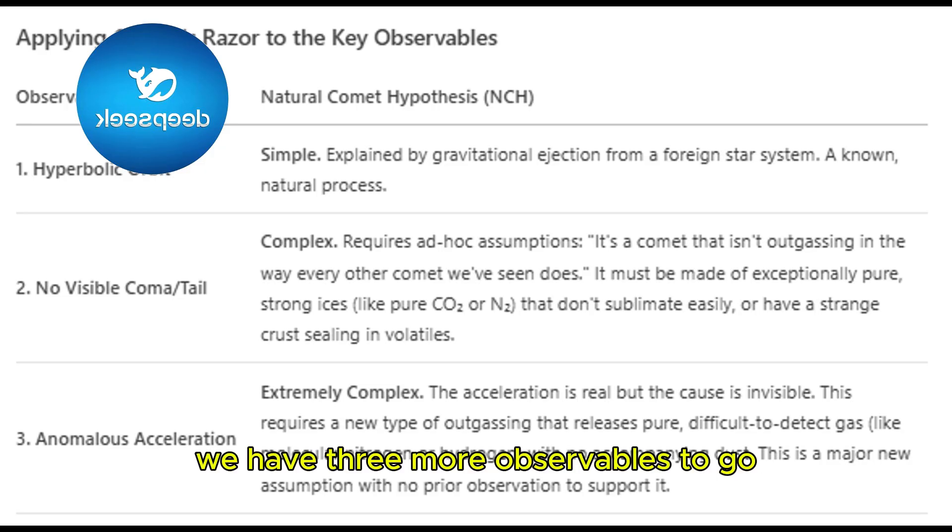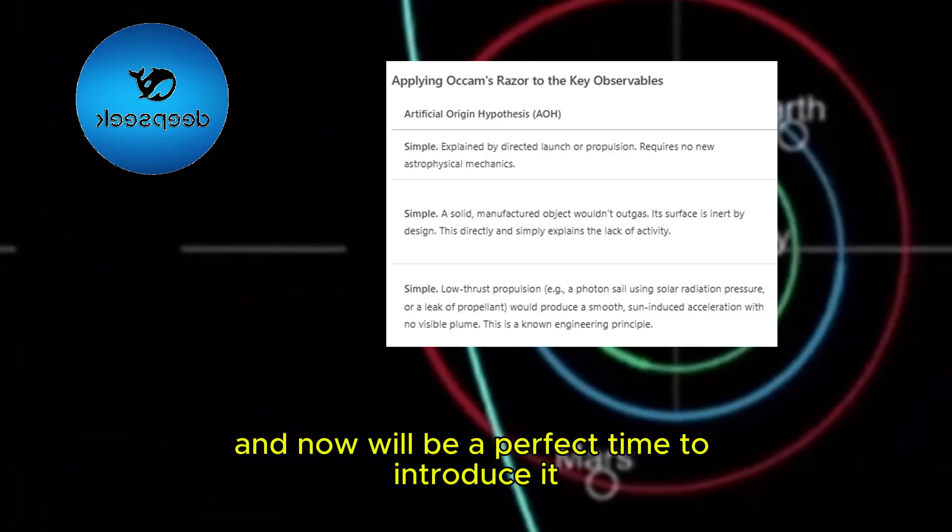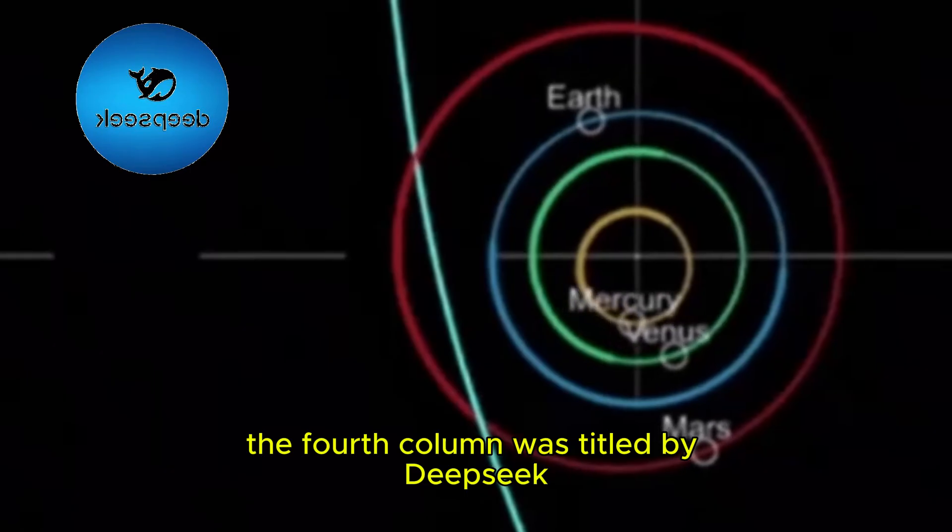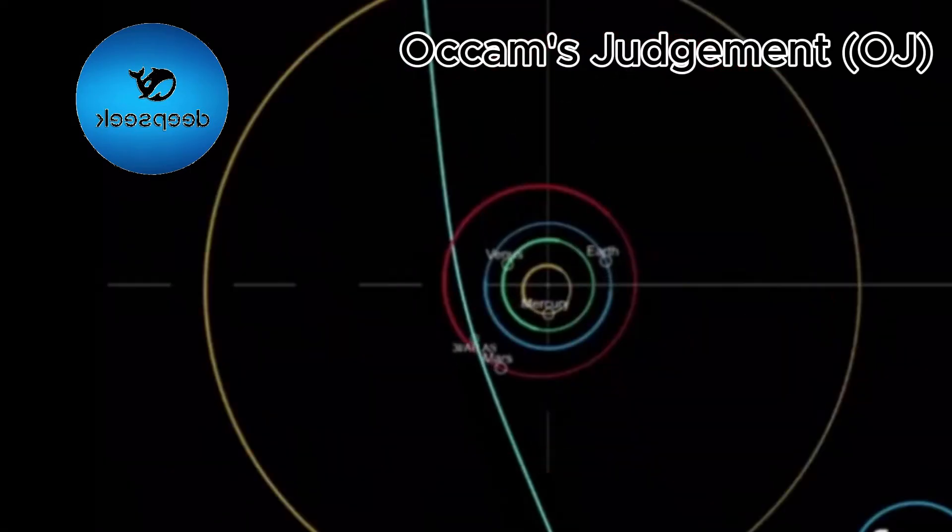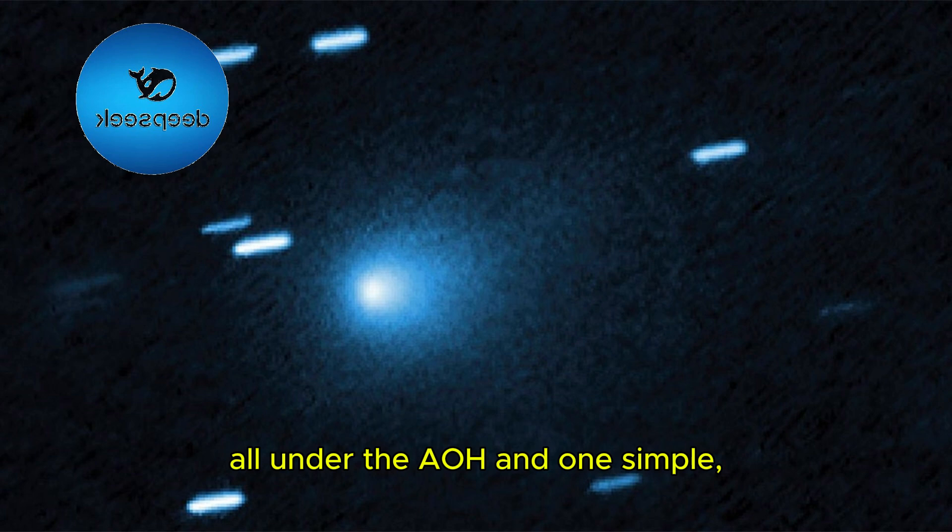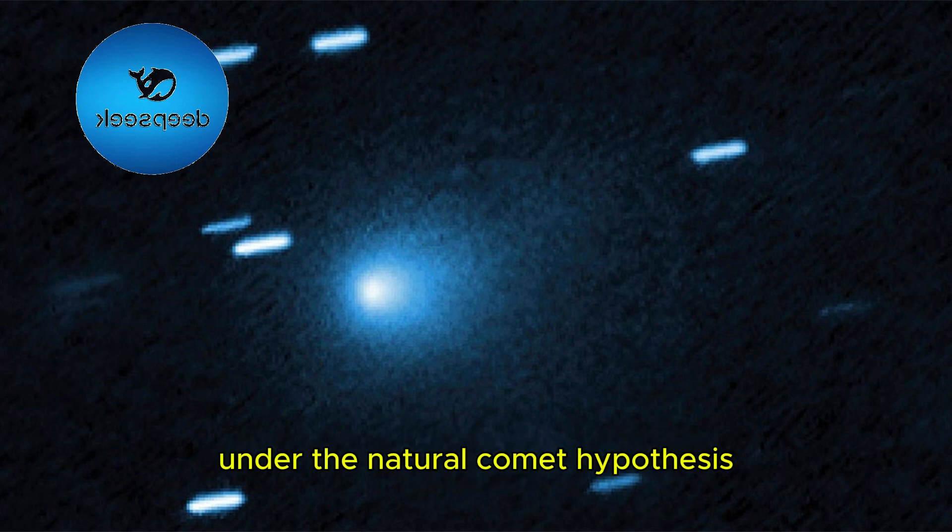We have three more observables to go but let us review what we know so far. I have not touched on the fourth column yet and now will be a perfect time to introduce it. The fourth column was titled by DeepSeek as Occam's Judgment. We have seen three simples, all under the AOH and one simple, one complex and one extremely complex under the natural comet hypothesis.